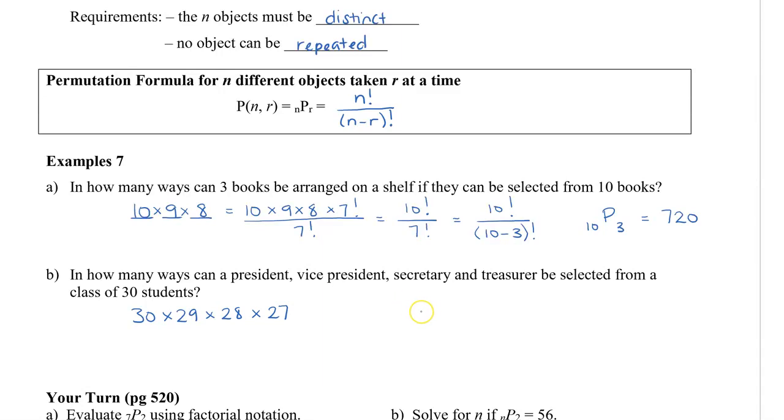In the permutation, we can say that we have 30 students, P, and we're going to choose 4 of them. So using our formula, we get 30 factorial in our numerator, and then 30 minus 4 factorial in our denominator. This simplifies to be 30 factorial divided by 26 factorial.